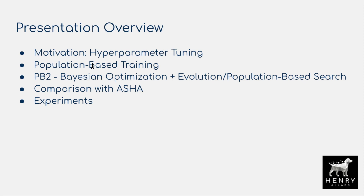Then we'll get into population-based training, which is an evolutionary search of hyperparameters, but different from most evolutionary search algorithms — it doesn't just learn a fixed configuration. The hyperparameter configuration evolves throughout training. So we'll get into the details of the algorithm, and then we'll look at the new extension, Population-Based Bandit 2, or PB2.